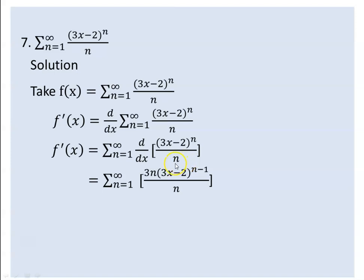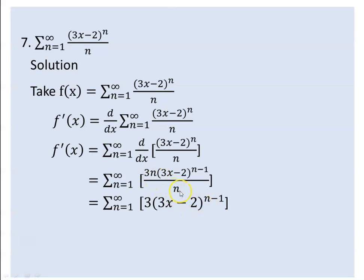Using the chain rule, the coefficient of x is three. So this gives three times n, and the n comes down. The expression simplifies, and the n in the numerator and n in the denominator cancel, giving us the series running from one to infinity of three times (3x-2) to the power of n minus one.